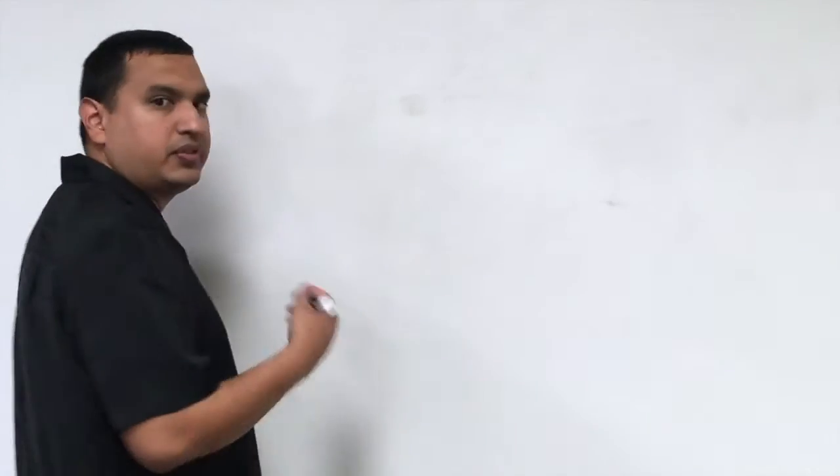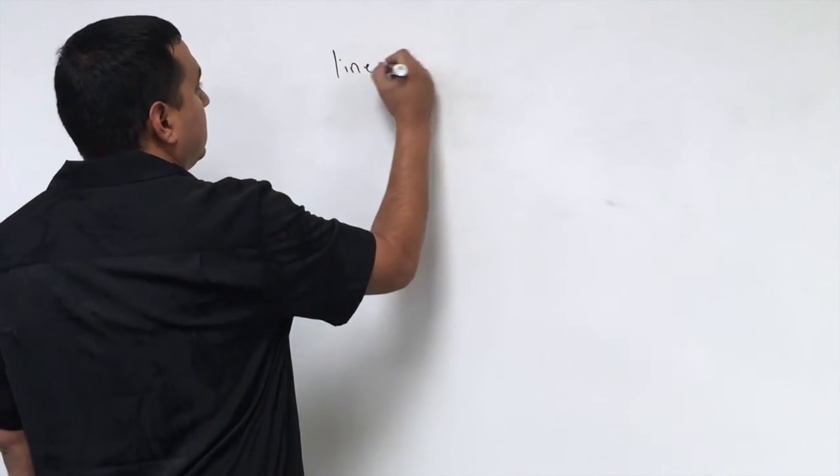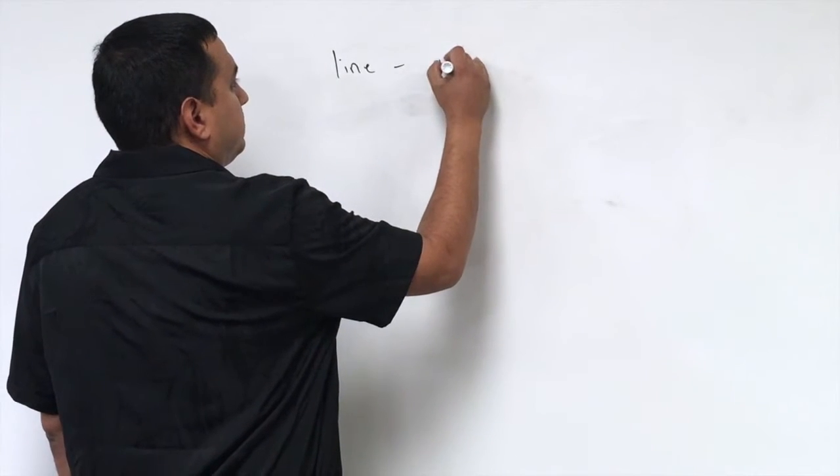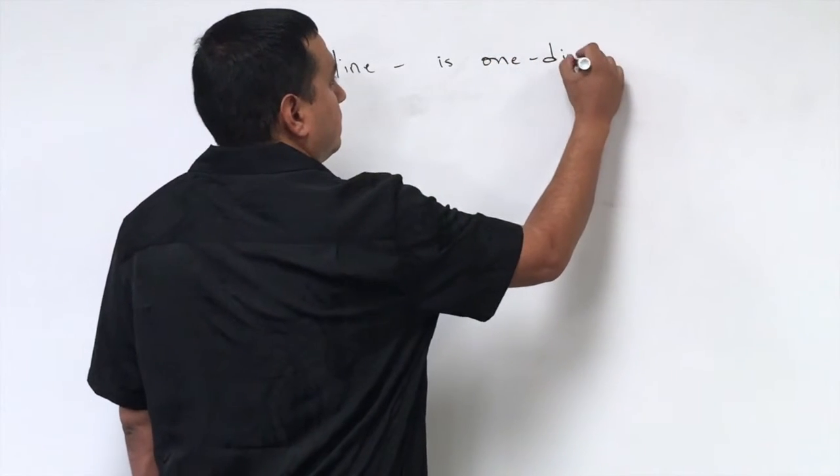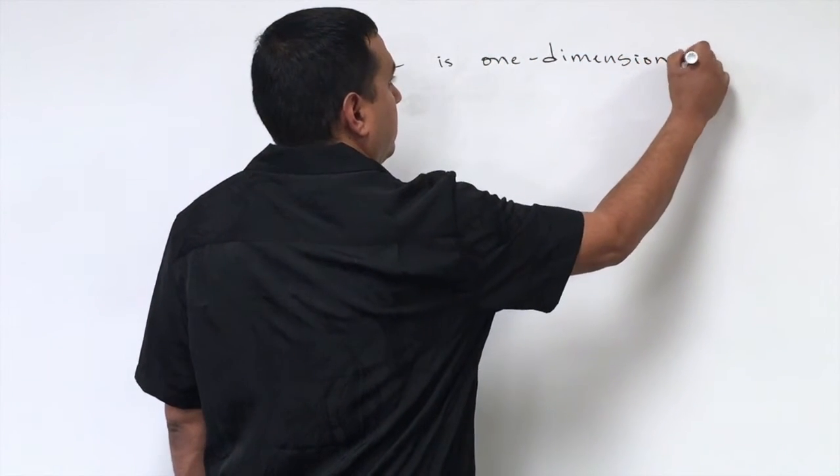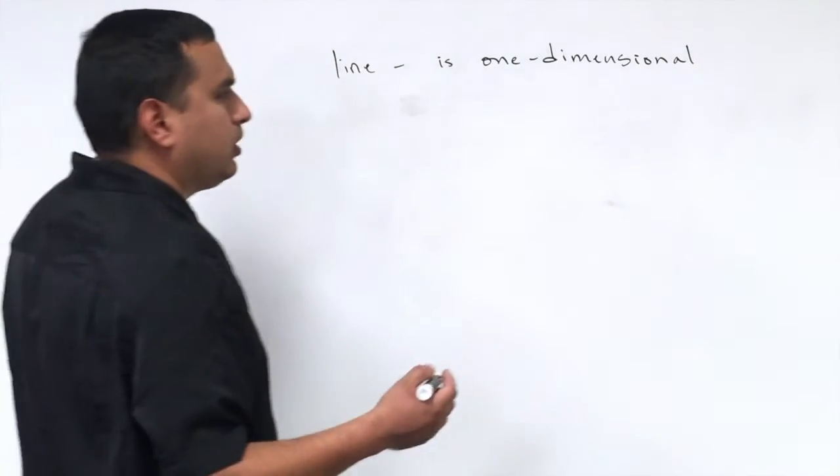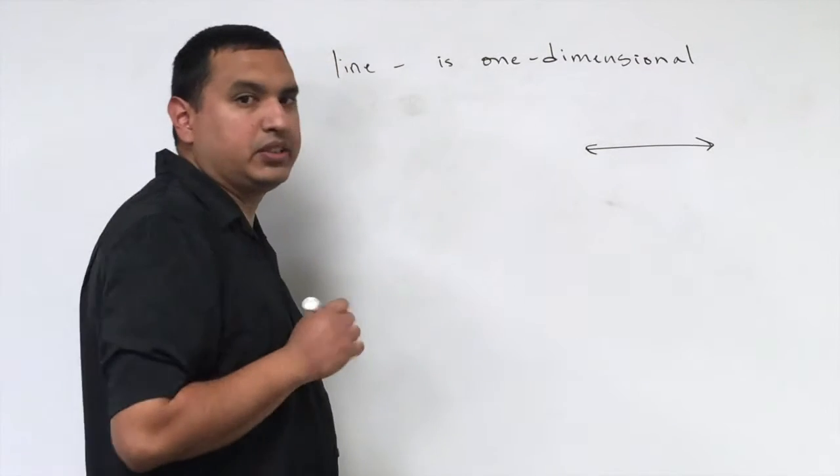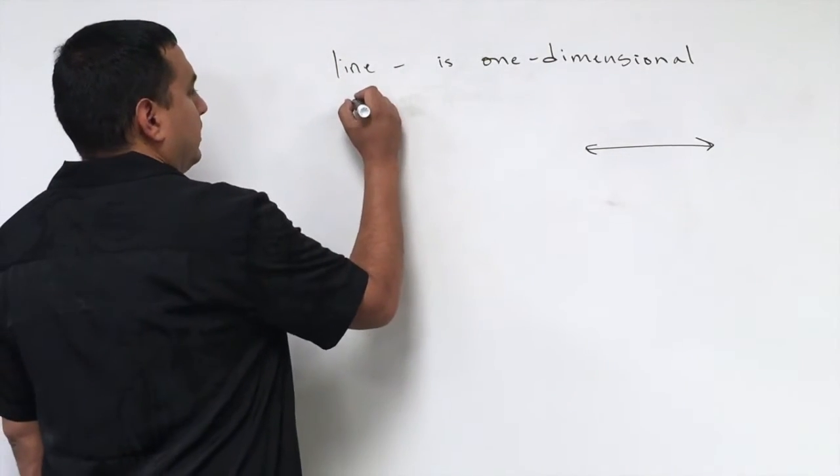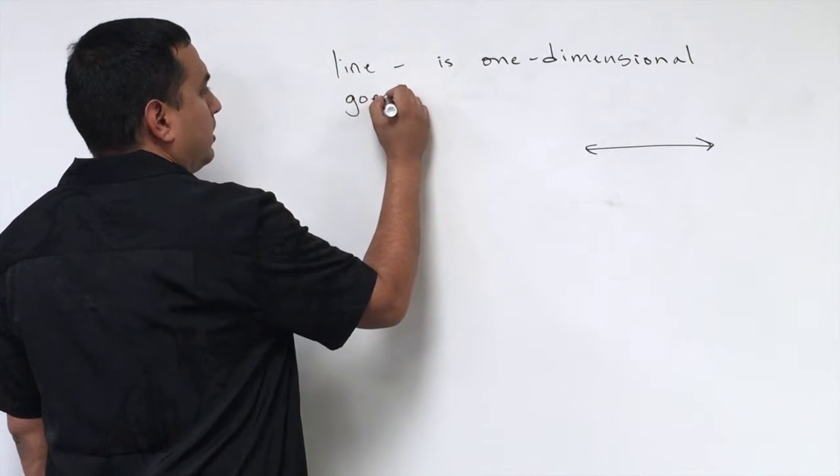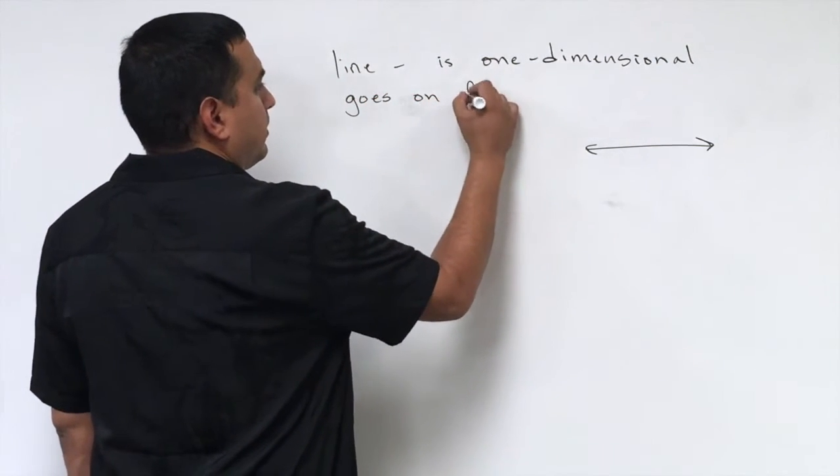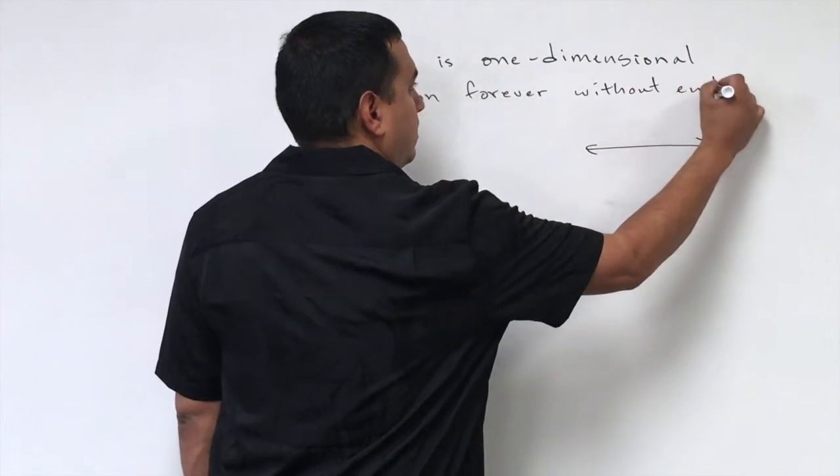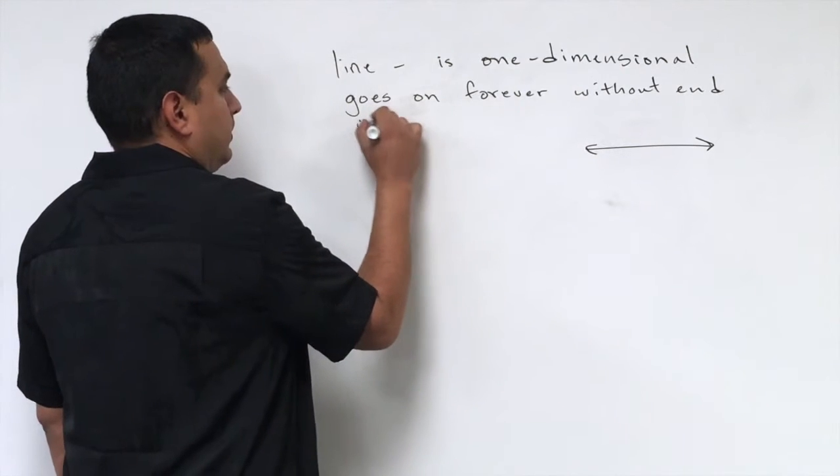The next undefined term is a line. Now a line is one dimensional. The way we draw this, we draw a line with two arrows on the end, on each end. We would describe it as goes on forever, without end, in both directions.